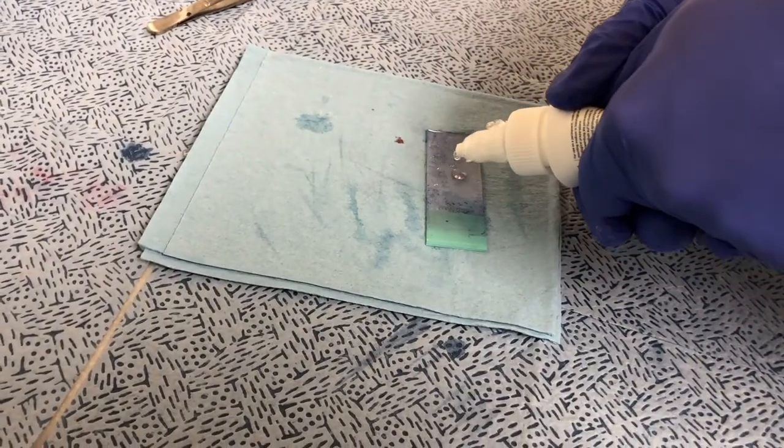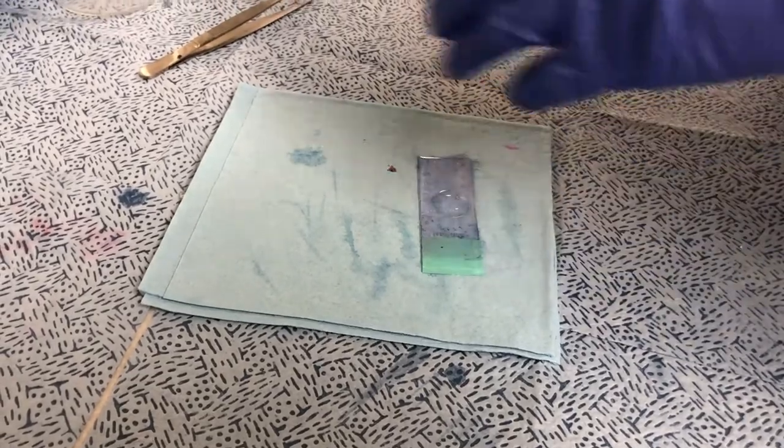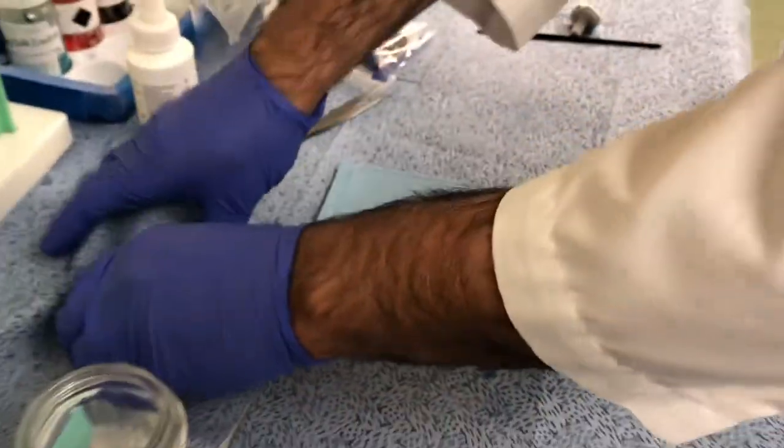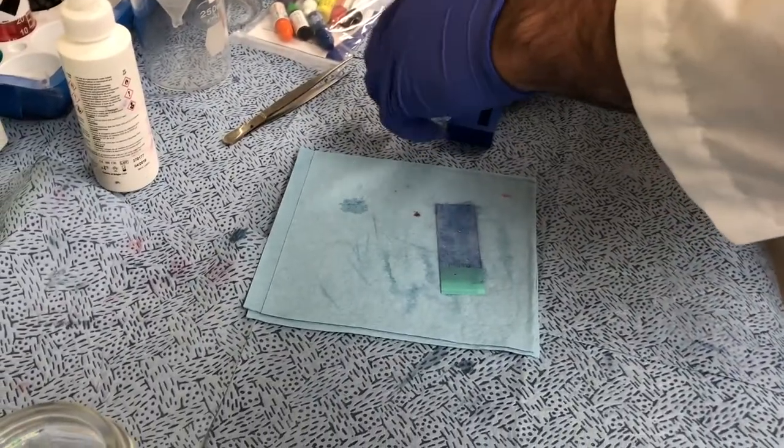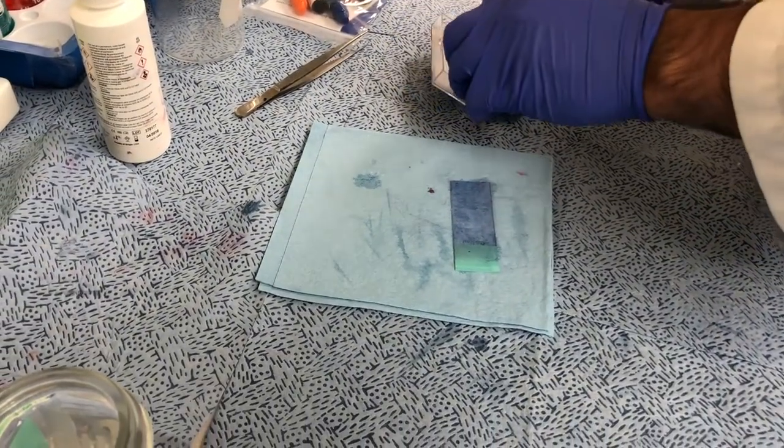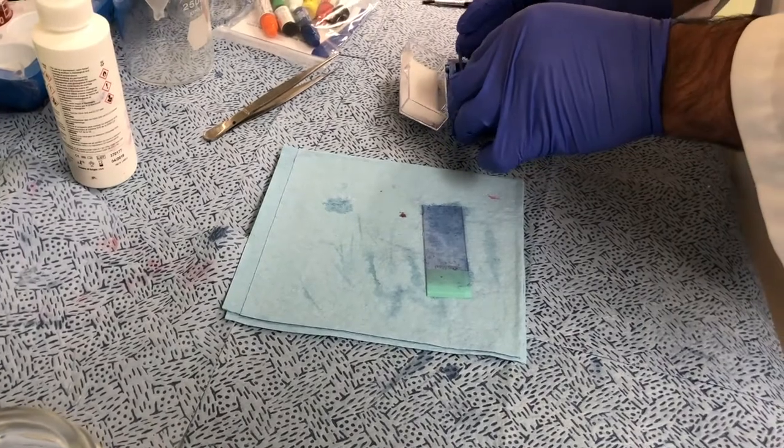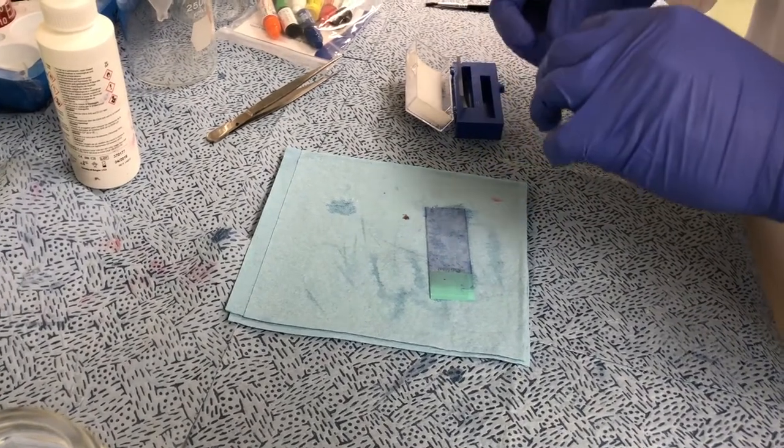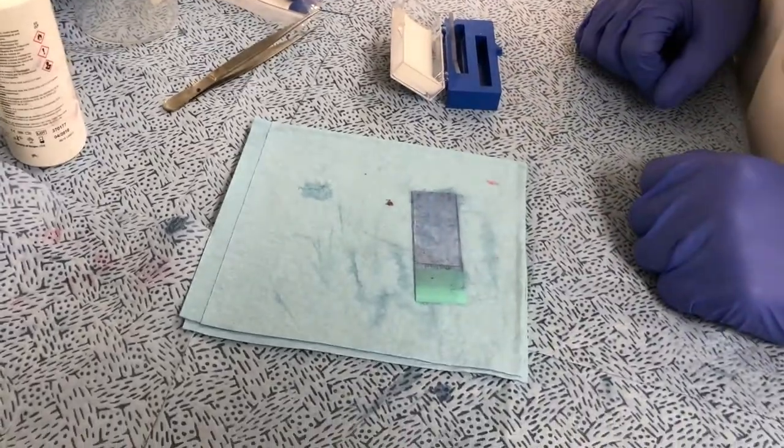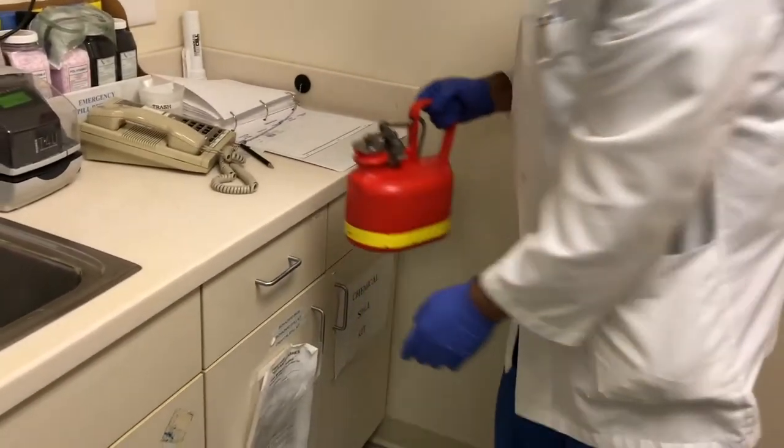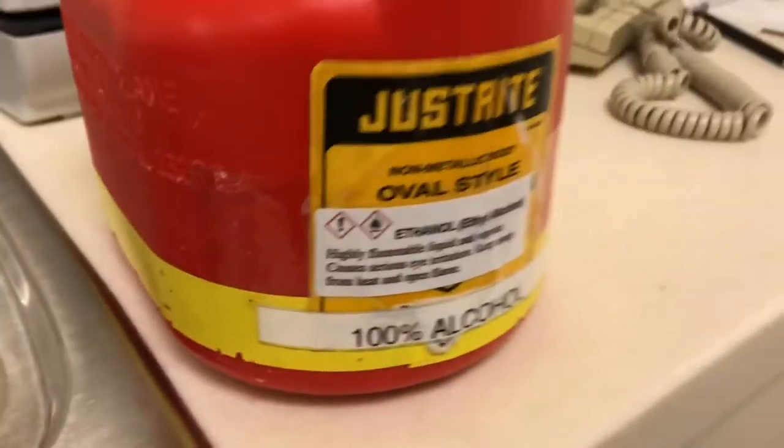Put a drop of oil on the slide and then put a coverslip over it. Clean the cryostat with the alcohol solution. Don't use water.